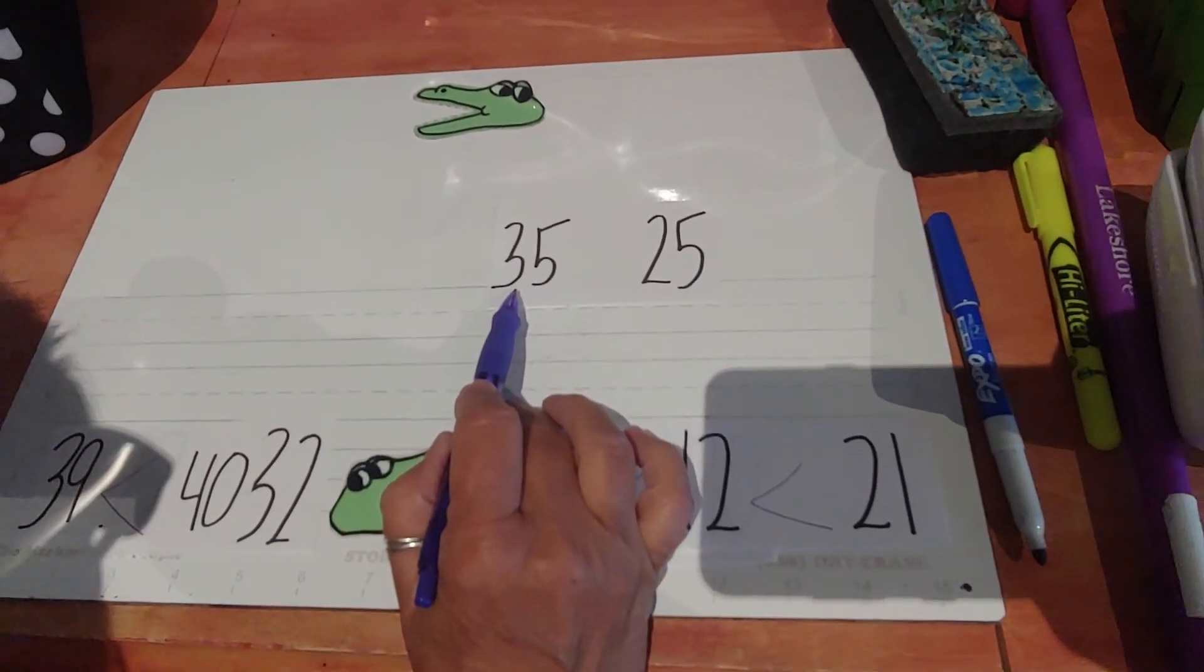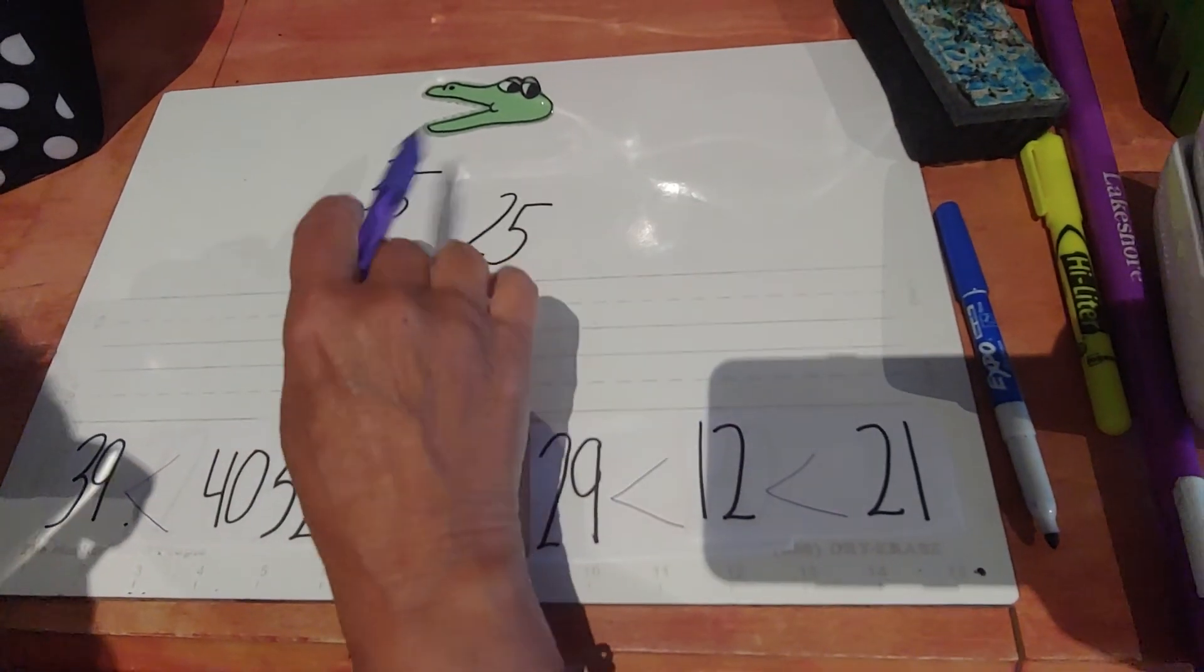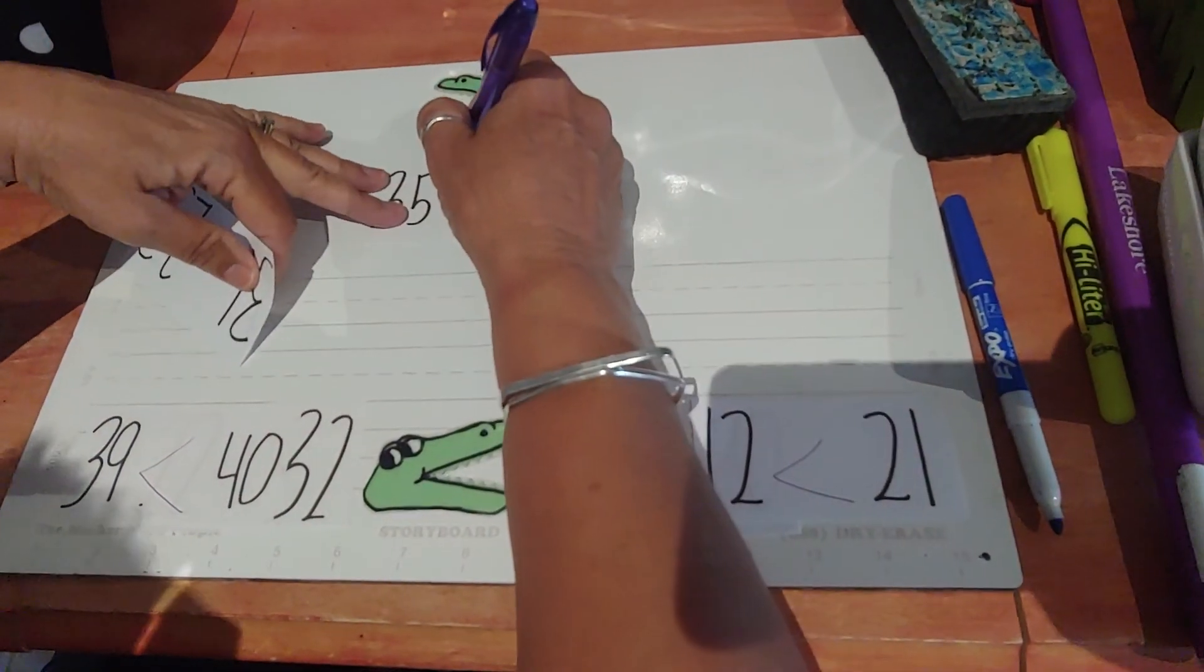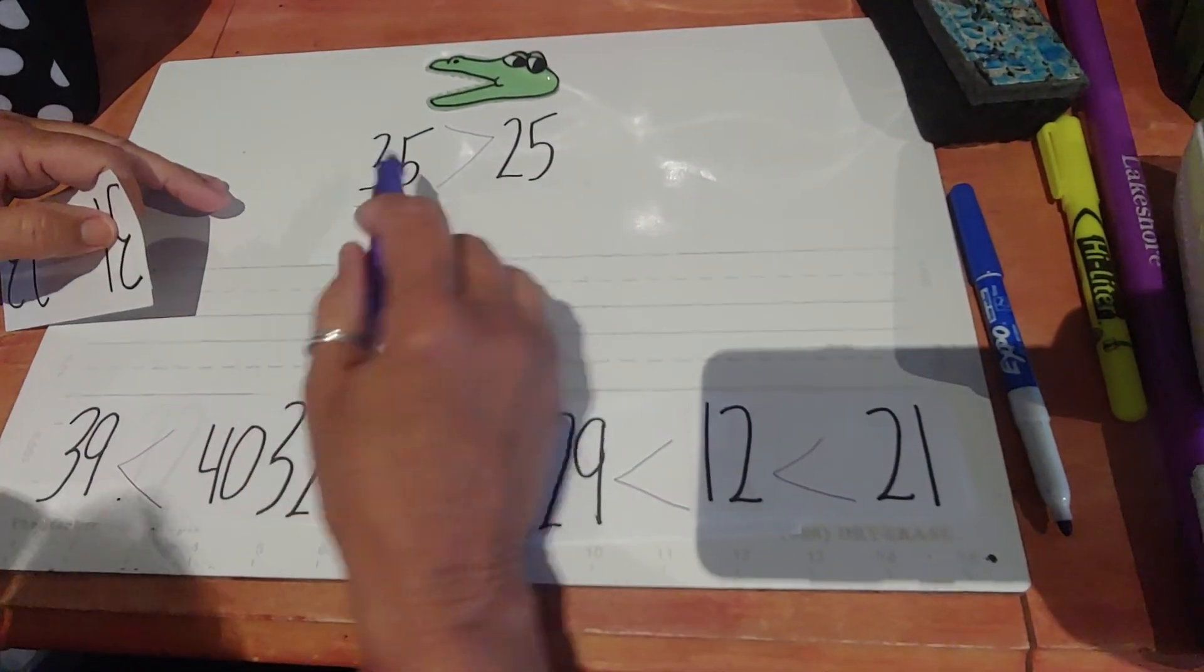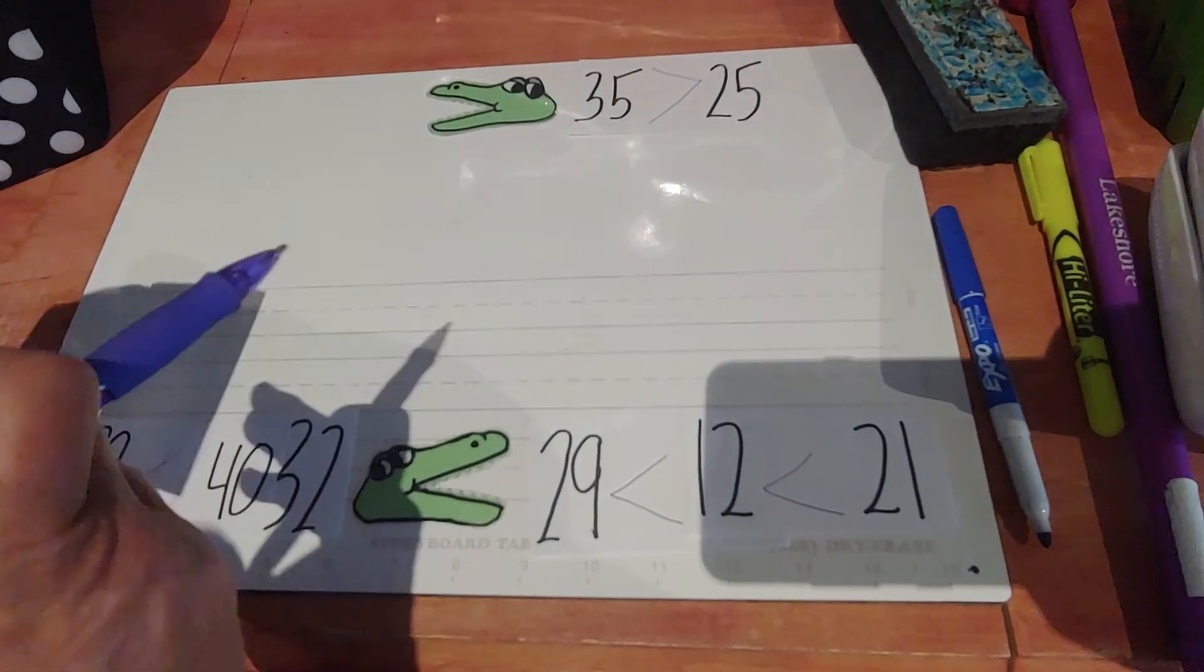35 is what to 25? Is 35 greater than 25? Yes, it is. Finally, this alligator gets a snack. It goes that way because the alligator wants to eat the bigger number. So that card can go up there.